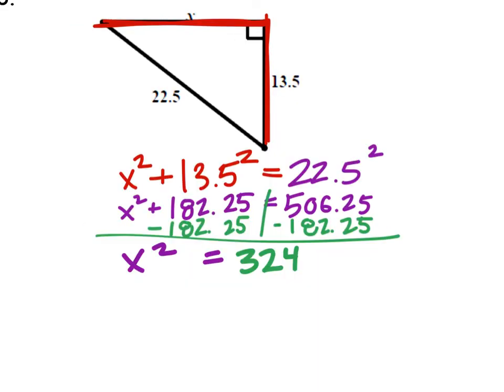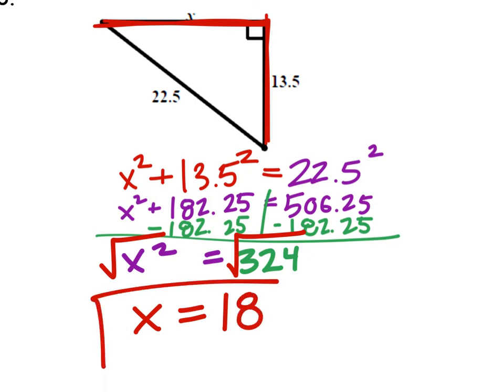So, we got 324 right here, and now we're going to square root both sides to get rid of the square because the square root and the square are inverse operations. So, we got x equals the square root of 324, and bam, x equals 18.